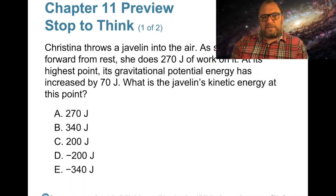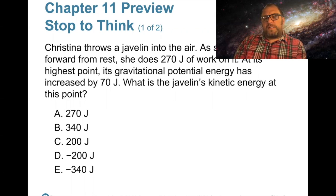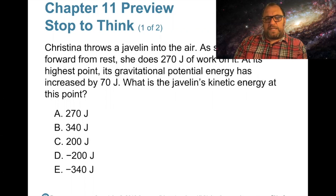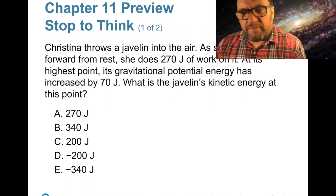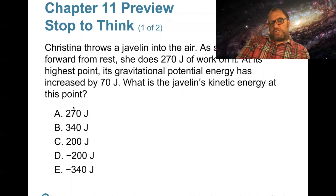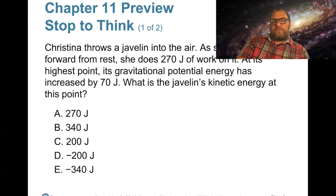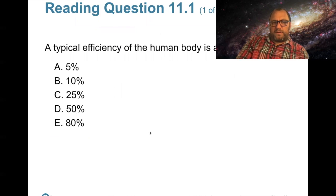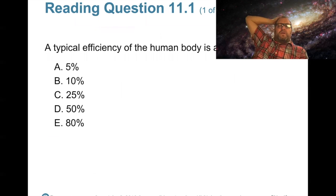Chapter 11 preview problem: Christina throws a javelin into the air. As she propels it from rest, she does 270 joules of work on it. At its highest point, its gravitational potential energy has increased by 70 joules. What is the javelin's kinetic energy at that point? Ignoring wind resistance, we subtract 70 from 270 to get 200 joules of kinetic energy.